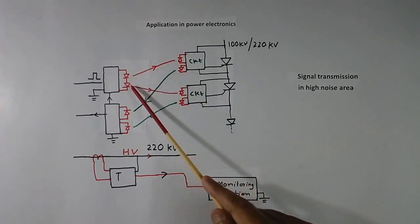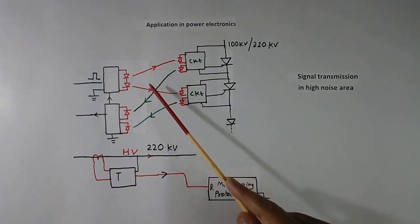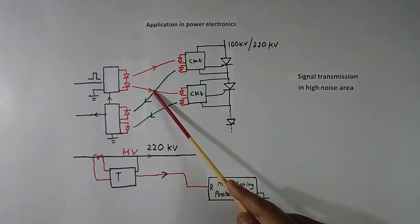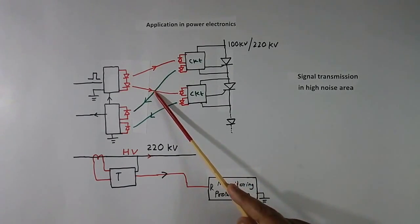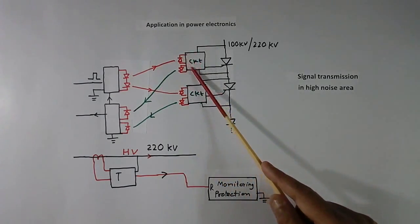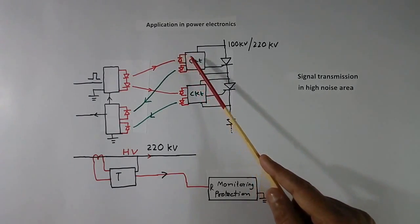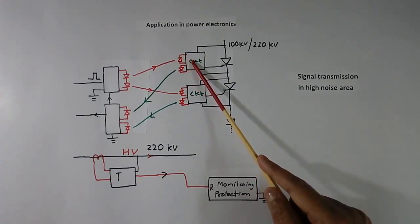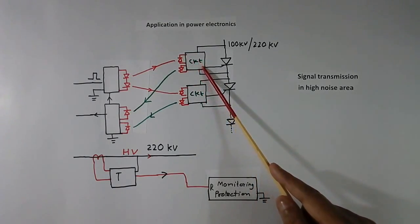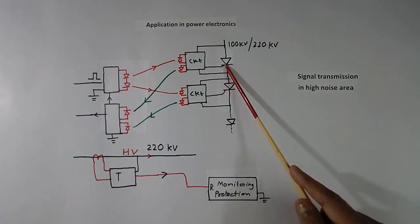We transmit this optical signal using a separate optical fiber cable. This circuit converts the optical signal back into an electrical signal, amplifies it, and triggers the thyristor.